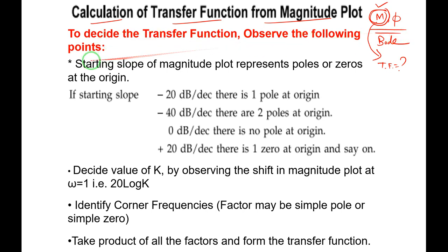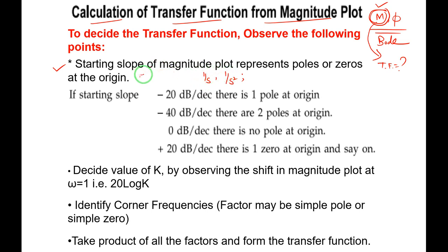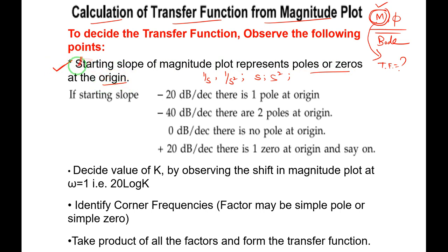The steps to determine the transfer function are: First, the starting slope of the magnitude plot represents poles or zeros at the origin. If the initial slope is −20 dB/decade, there is one pole at the origin (factor 1/s). If −40 dB/decade, two poles at origin (1/s²). If 0 dB/decade, no poles or zeros at origin. If +20 dB/decade, one zero at origin (s). If +40 dB/decade, two zeros at origin (s²).